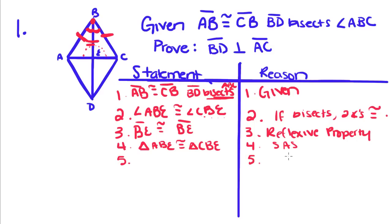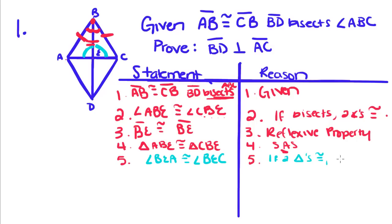Remember that this angle is the included angle of those two sides, which is required for side-angle-side. So now we can get angle BEA congruent to angle BEC. The reason is: if two triangles are congruent, then corresponding parts are also congruent.